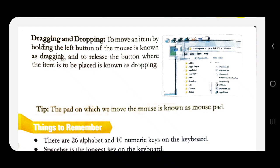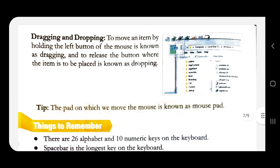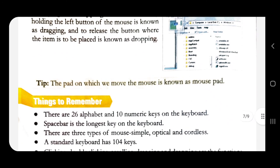Dragging and dropping: moving an item by holding the left button of the mouse is known as dragging. Releasing the button where you want to place the item is known as dropping. Suppose you want to change the place of any icon — you click and hold the left button (dragging) and move it wherever you want, then release it (dropping). I hope the chapter is clear; if you have any doubt you can call me.